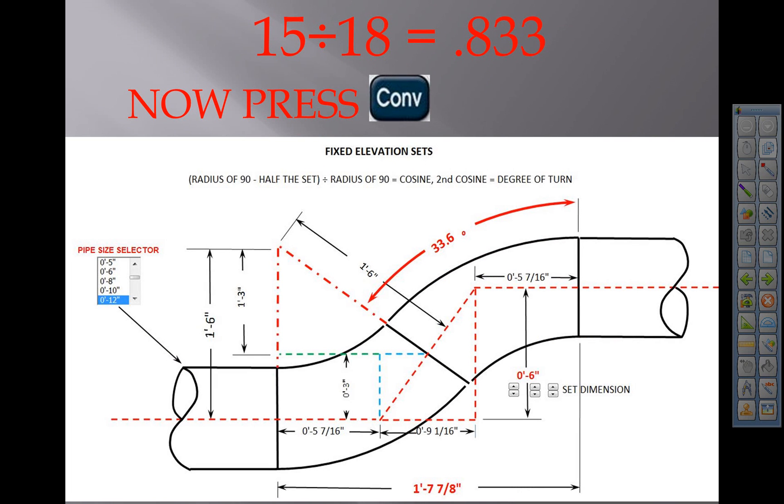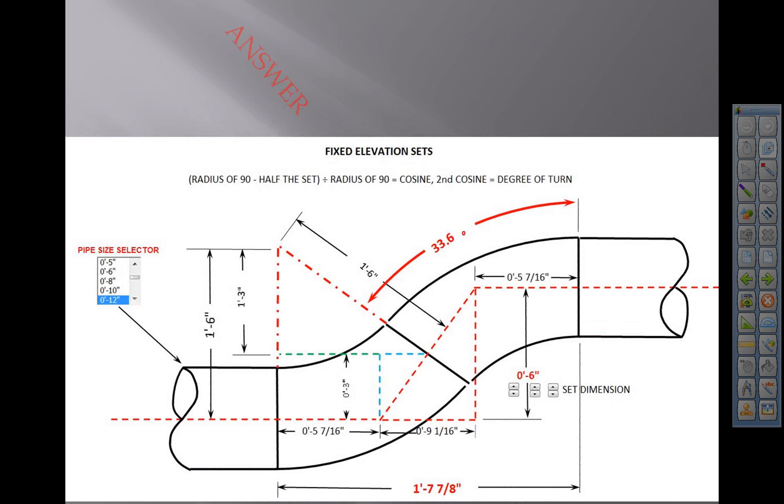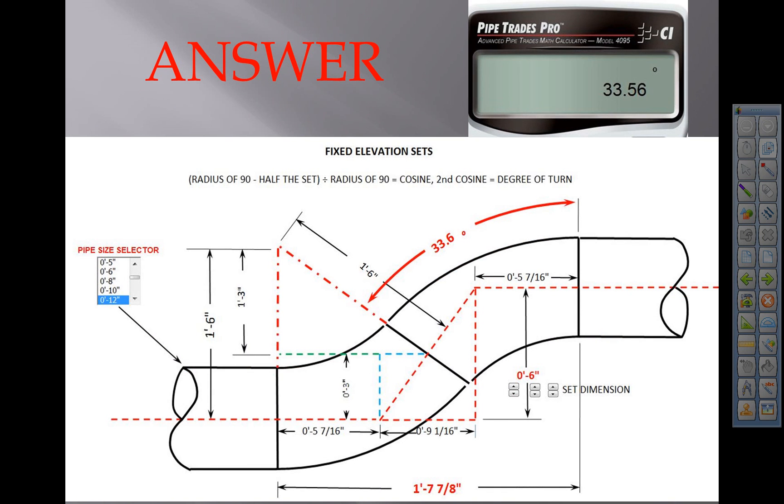With the Pipe Trades Pro it would be convert cosine. Answer: 33.5.